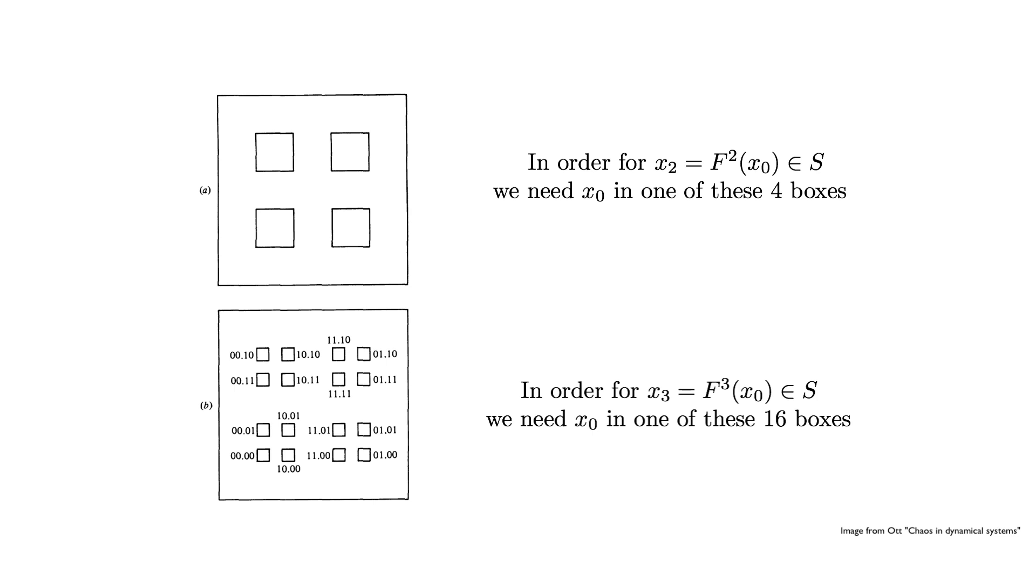Thus, lambda can be written as the infinite intersection of a set of non-empty, closed, nested sets. It forms a Cantor set and is, itself, non-empty.